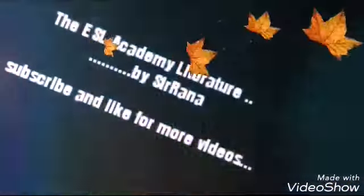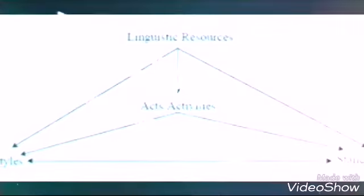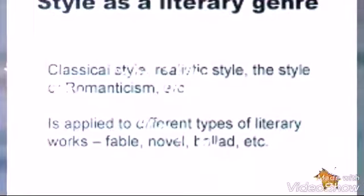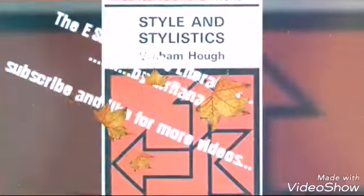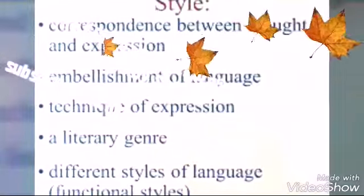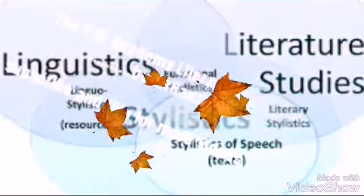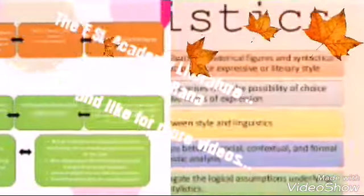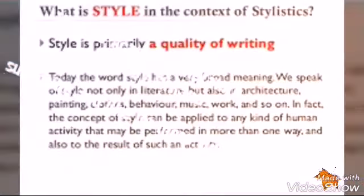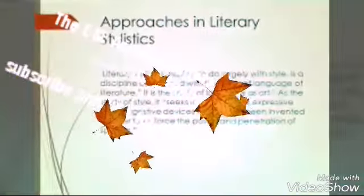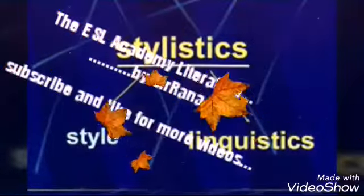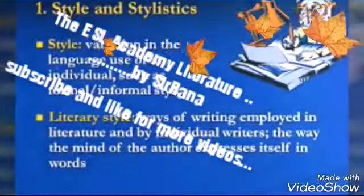First of all, what is style? Style is a unique and individual way of writing — it is different from person to person, author to author, human being to human being. For example, one writer writes in a different style from other authors. It varies, and it uses different stylistic and rhetorical devices as compared to other writers.